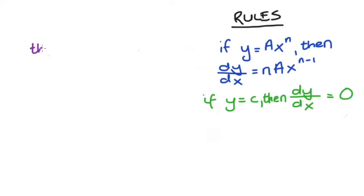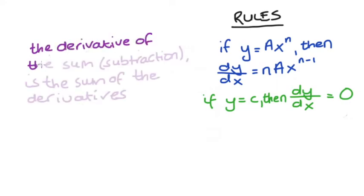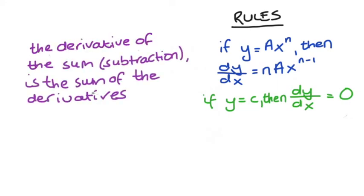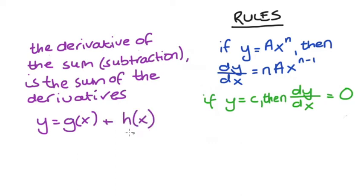The next rule is that the derivative of the sum is the sum of the derivatives, and this also works with subtraction. You might see it written like this: y is equal to g(x) plus h(x), in which case dy/dx is just going to be equal to dg/dx plus dh/dx.